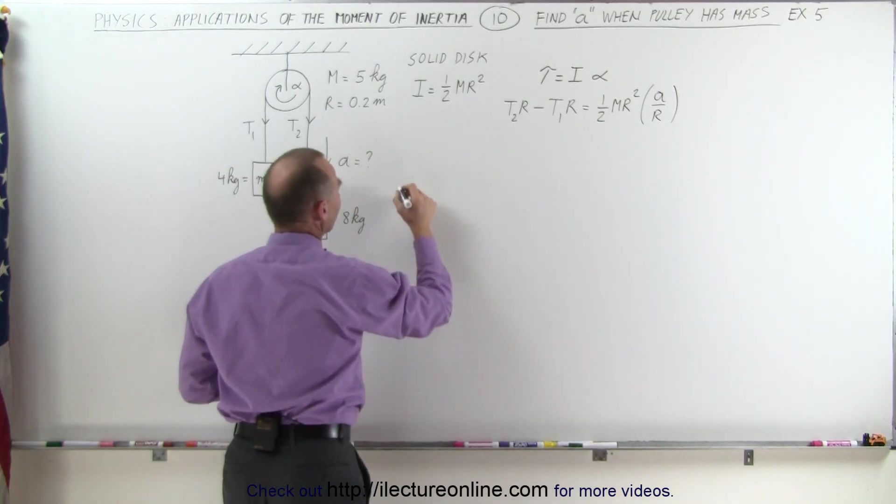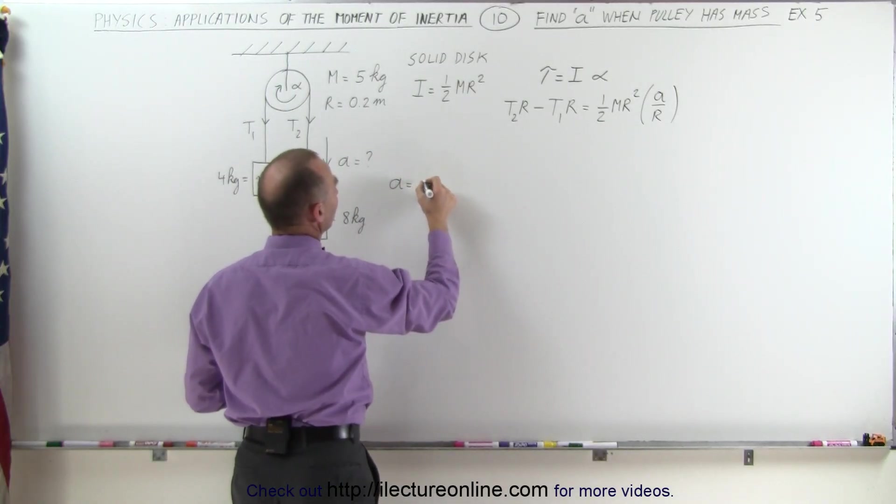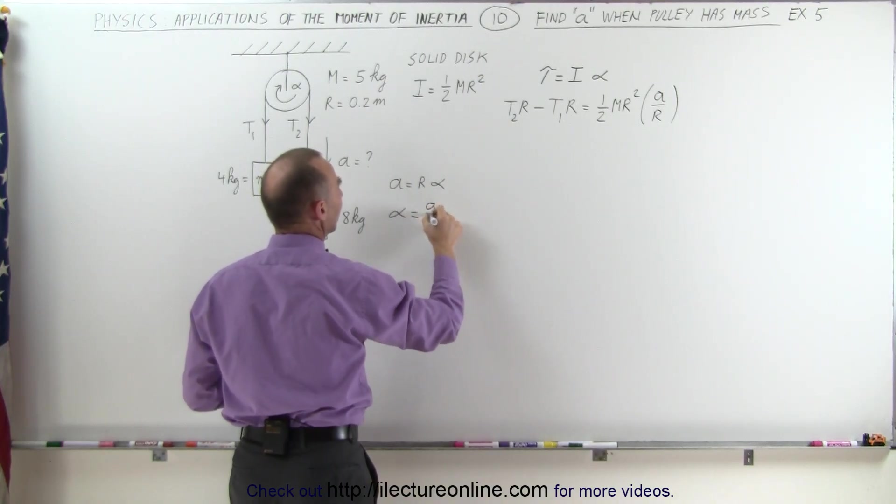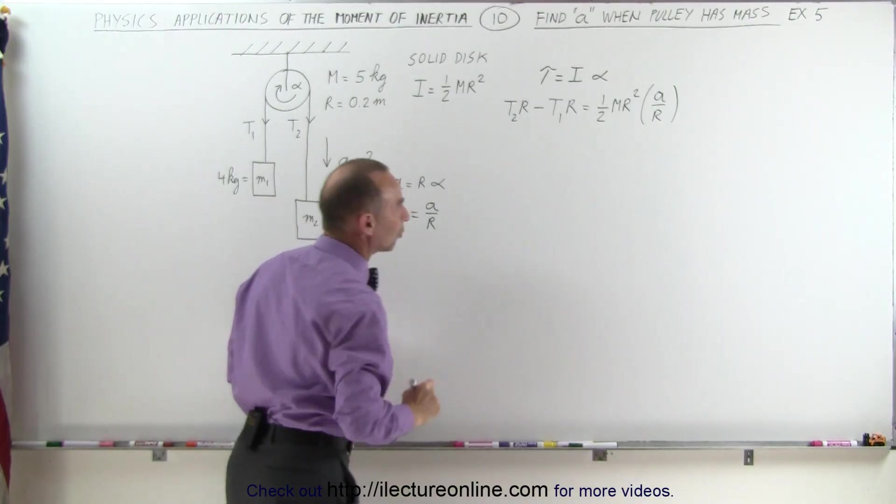Again, the relationship is that the linear acceleration is equal to the radius times the angular acceleration, which means the angular acceleration is equal to A divided by R. So we can make the substitution.